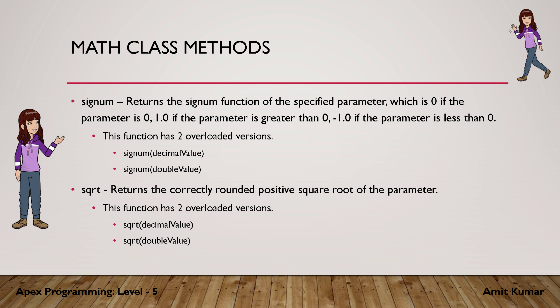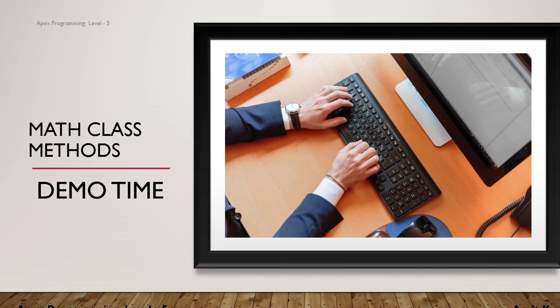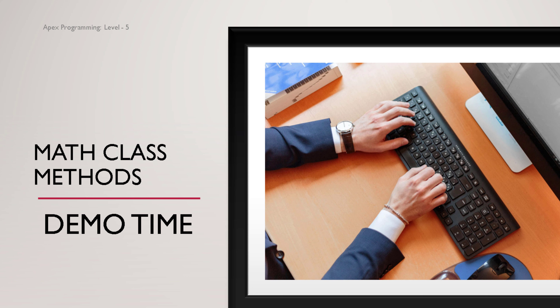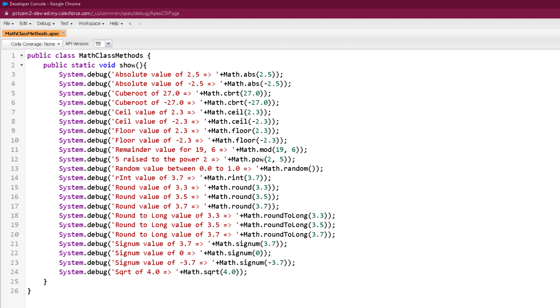sqrt, or square root, returns the correctly rounded positive square root of the parameter. It has two overloaded versions: decimal and double. Now it's time to see things practically, so here we are on our developer console and we'll create a program to see the Math class methods.